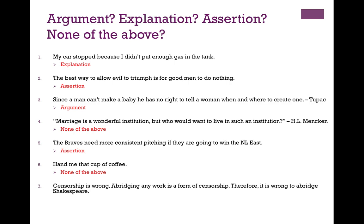Number seven: 'Censorship is wrong. Abridging any work is a form of censorship. Therefore, it is wrong to abridge Shakespeare.' This is an argument. The conclusion is nicely laid out: 'Therefore, it is wrong to abridge Shakespeare.' Premise one: censorship is wrong. Premise two: abridging any work is a form of censorship. Conclusion: therefore, it is wrong to abridge Shakespeare. If you didn't get all of these correct, don't worry too much. What's important right now is having a general sense of the difference between an argument and an explanation. Remember: an argument tries to convince, whereas an explanation attempts to clarify. And an assertion offers no reason to think it's actually true.